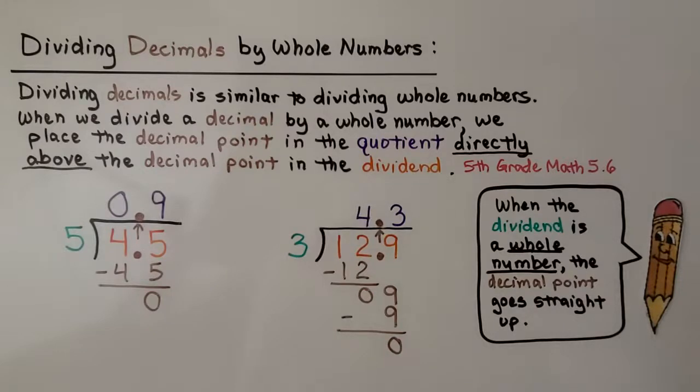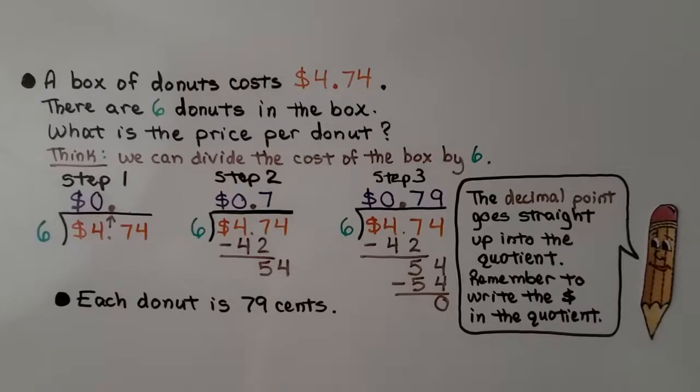Very easy. When you're dividing and the divisor is a whole number, just bring that decimal point straight up. Same thing goes with word problems that involve money. A box of donuts costs $4.74. There's 6 donuts in the box. What's the price per donut? We can divide the cost of the box by 6. Then we'll know how much each donut costs. We have $4.74, dividing it by 6. How many times can 6 fit into 4? It can't, so we're going to put a 0 there. We're going to remember our dollar sign.